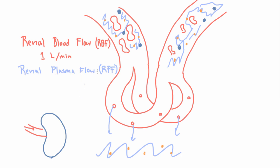There's going to be less plasma flowing than blood. It turns out that the amount might be about 600 milliliters per minute, which is like 60% of the renal blood flow.